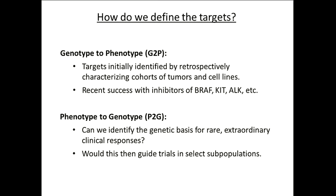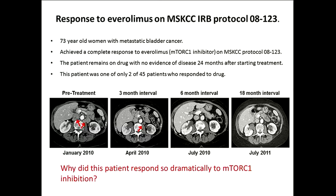That's the typical approach — but that's not what I'm going to talk about for the first part of this talk. I'm going to talk about the opposite: what we call the extraordinary responder approach or N-of-1 initiative. This is where we take patients who have already had a response and try to figure out what made them genetically unique. The attractiveness of this approach, coming from a molecular pharmacology background, is that we already know the drug is effective at inhibiting some target important in that cancer cell.